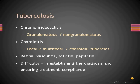Retinal vasculitis, vitritis, and papillitis can also be part of tuberculosis. So tuberculosis can present as panuveitis or any of the above-mentioned forms of uveitis.